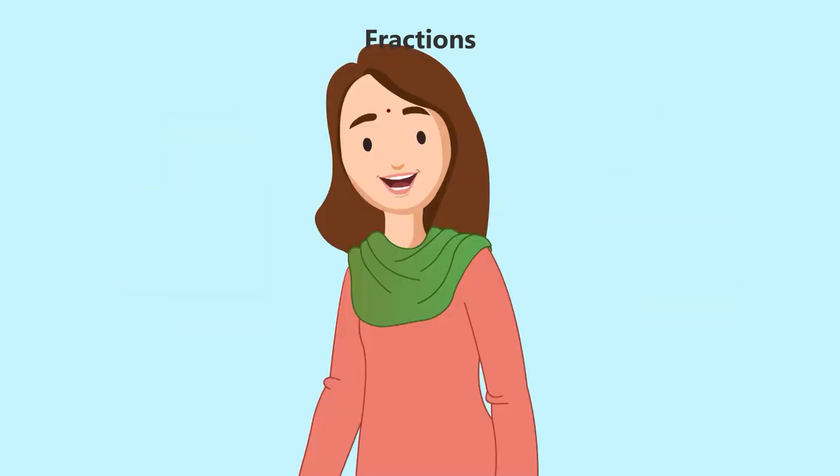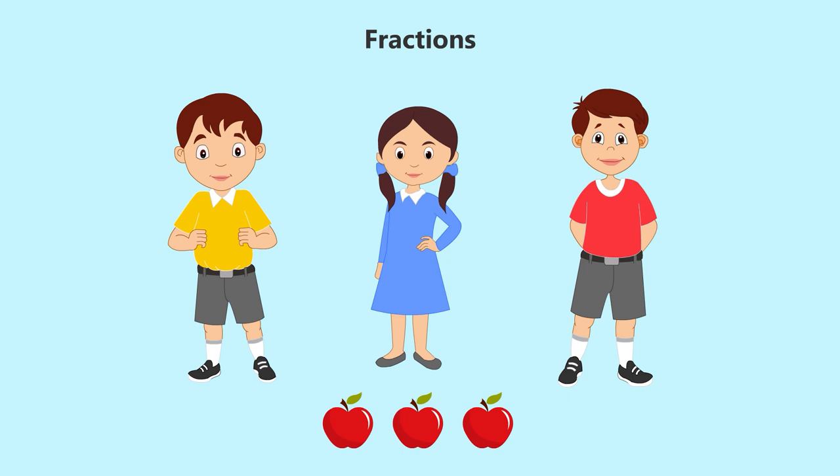Mother said, now everyone has one marble, so each one has an equal number of marbles. So one part from three is with each of you. If we would have taken three apples instead of three marbles, then you would have got one apple each. Would anyone have got all the three apples? All of them said, no.